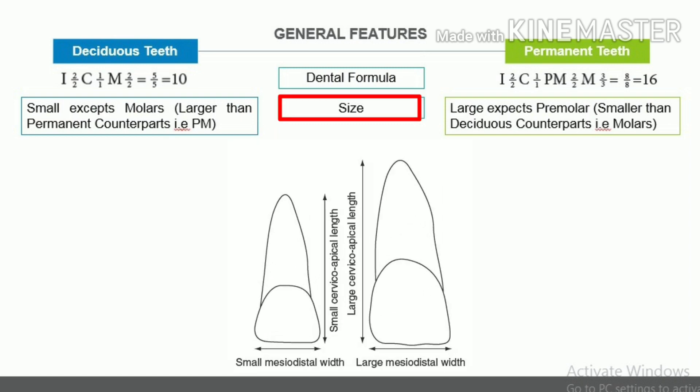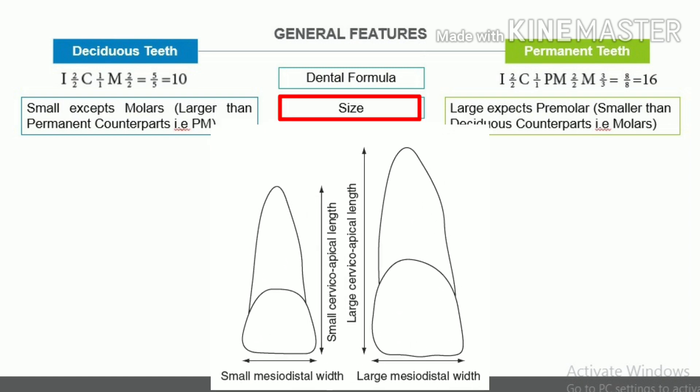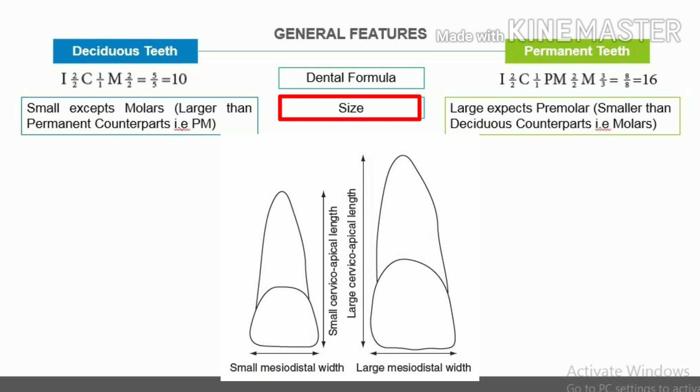Size. Deciduous teeth are generally small when compared with their permanent counterpart, except in the case of deciduous molars, which are larger when compared with their permanent counterpart — for example, the premolars. Permanent teeth are generally large when compared with their deciduous counterpart, except the premolars which are small when compared with their deciduous counterpart — for example, the molars.